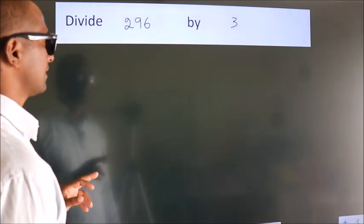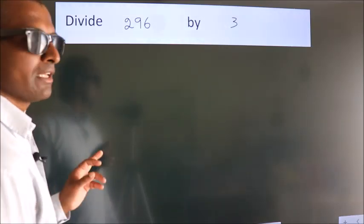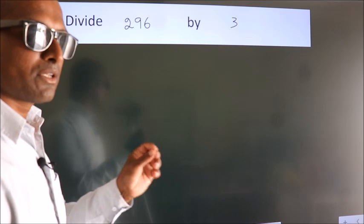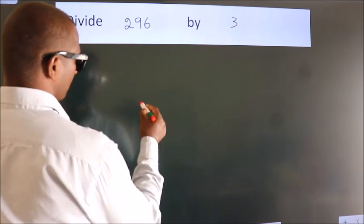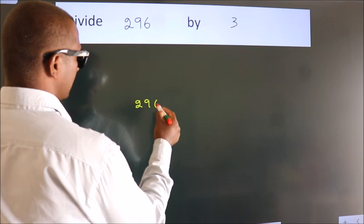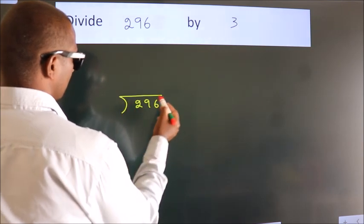Divide 296 by 3. To do this division, we should frame it in this way. 296 here, 3 here.